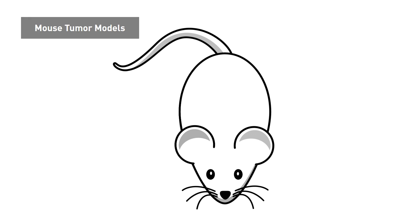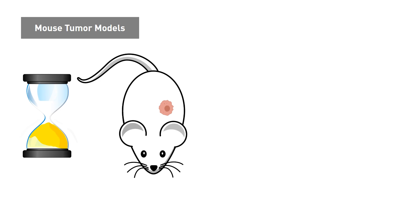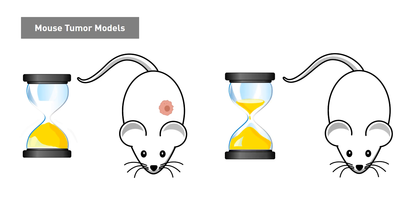Some researchers work with mouse models that spontaneously develop tumors. Certain inbred strains will develop tumors at a higher rate than others. Drawbacks to this method are that the time to develop tumors may vary from one mouse to the next and that the rates of spontaneous tumor formation are generally lower than in induced mouse models.